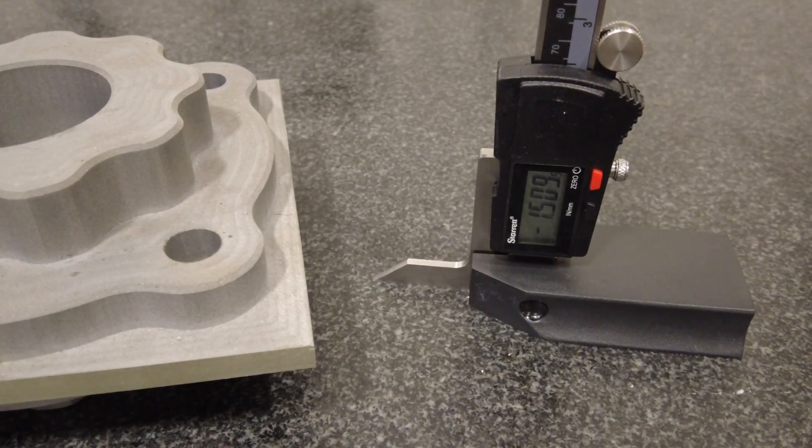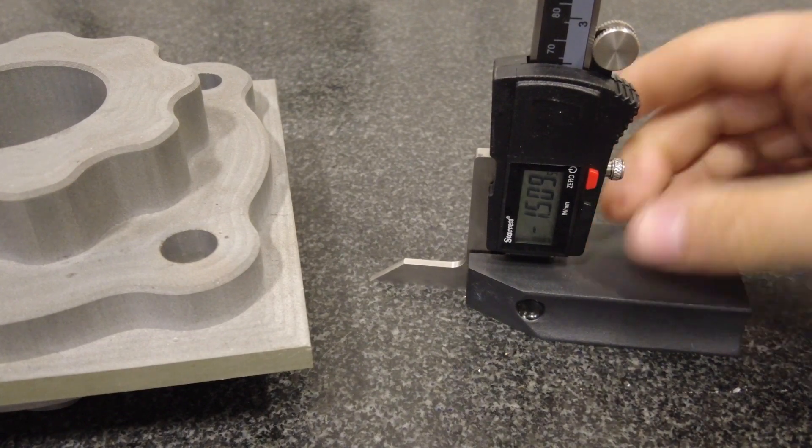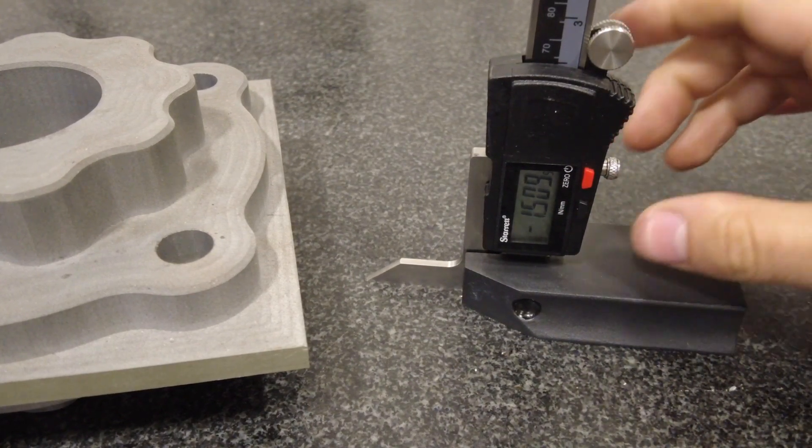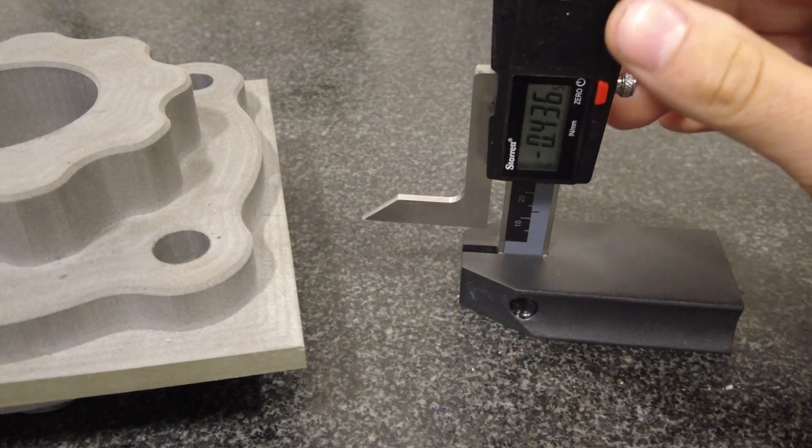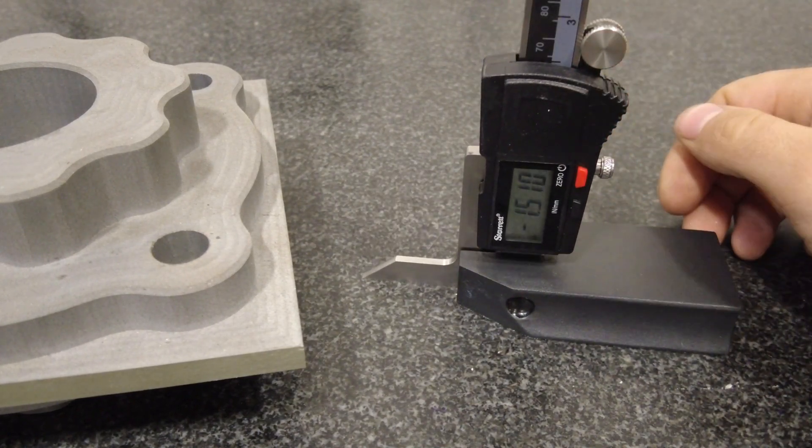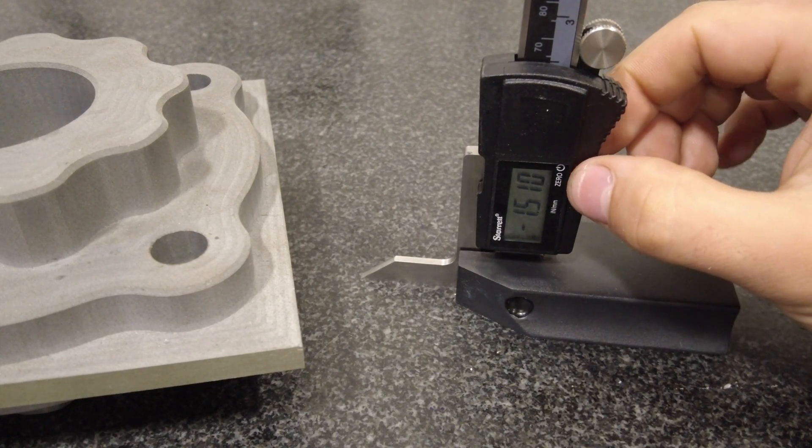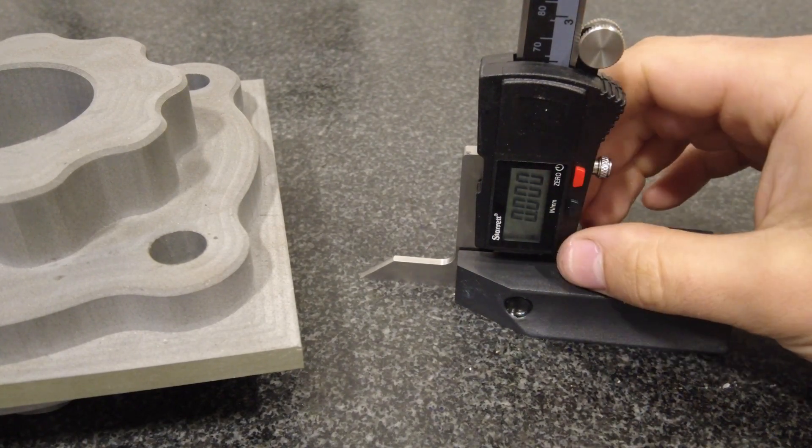Next we're going to read a digital height gauge. A digital height gauge looks like a caliper on a stand. It's a lot simpler because it has this digital readout. The first thing you want to do is bring this down to the table, making sure you keep it flat, and hit this red button to zero it out.